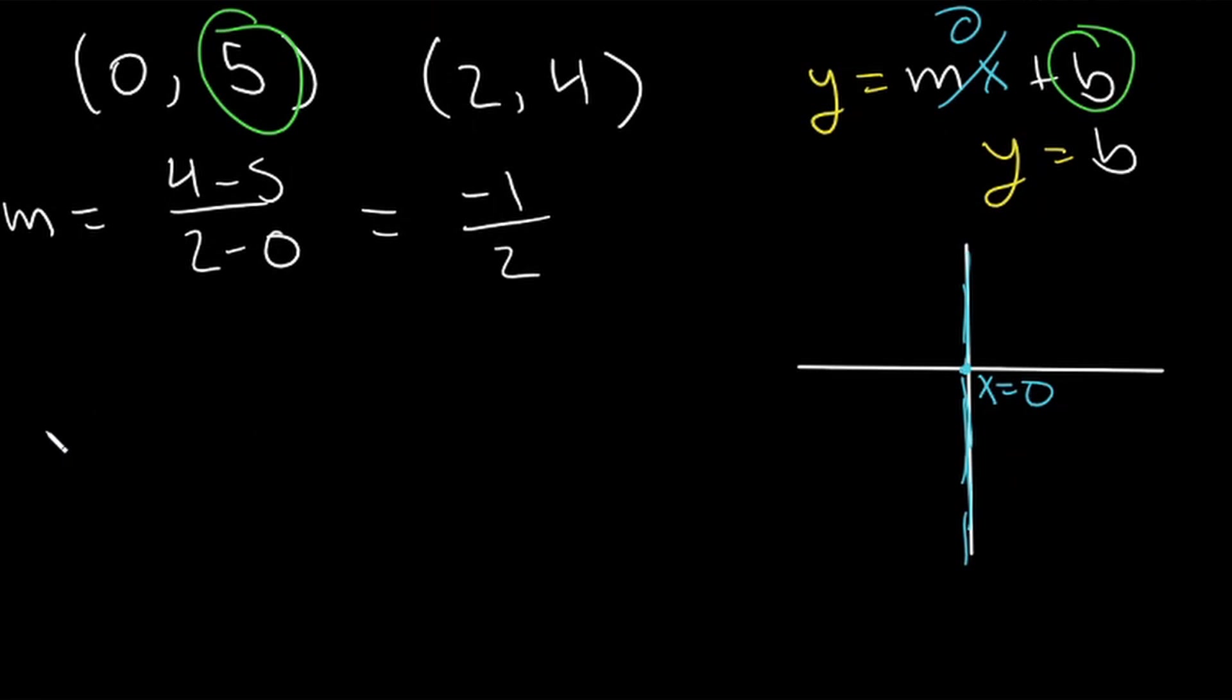So now we can write our equation. It is going to be y is equal to our slope, which is negative one-half times x. And then we add 5. So our equation in slope-intercept form is y equals negative one-half x plus 5. So that's it for this video on slope-intercept form of linear equations.